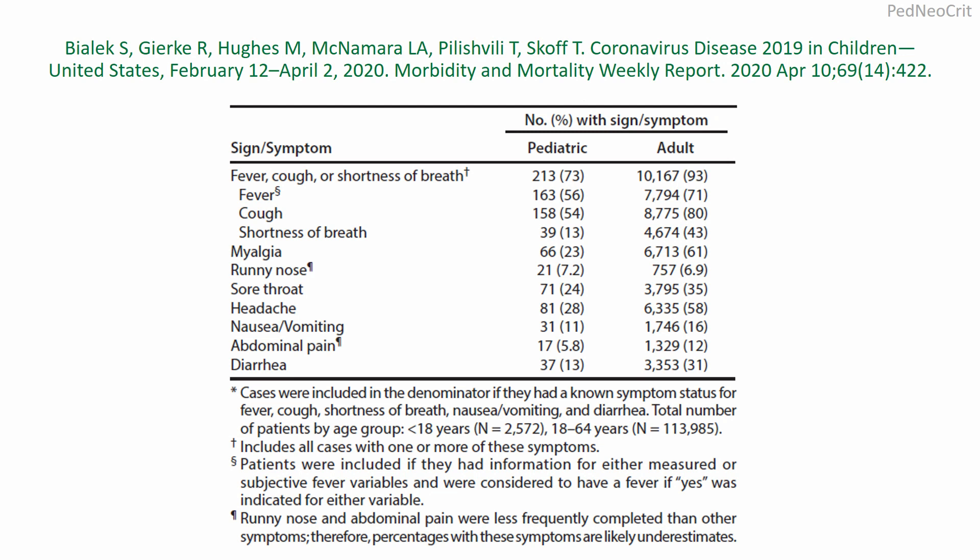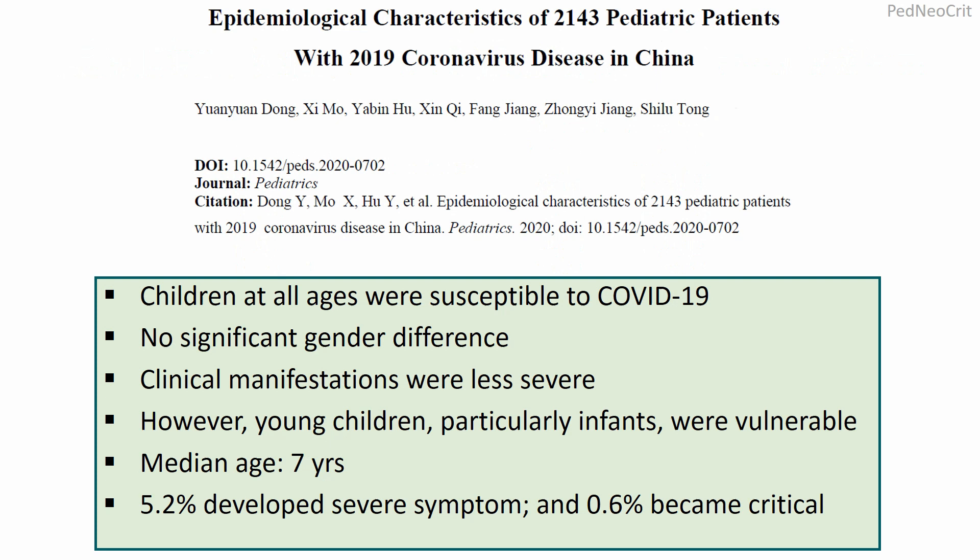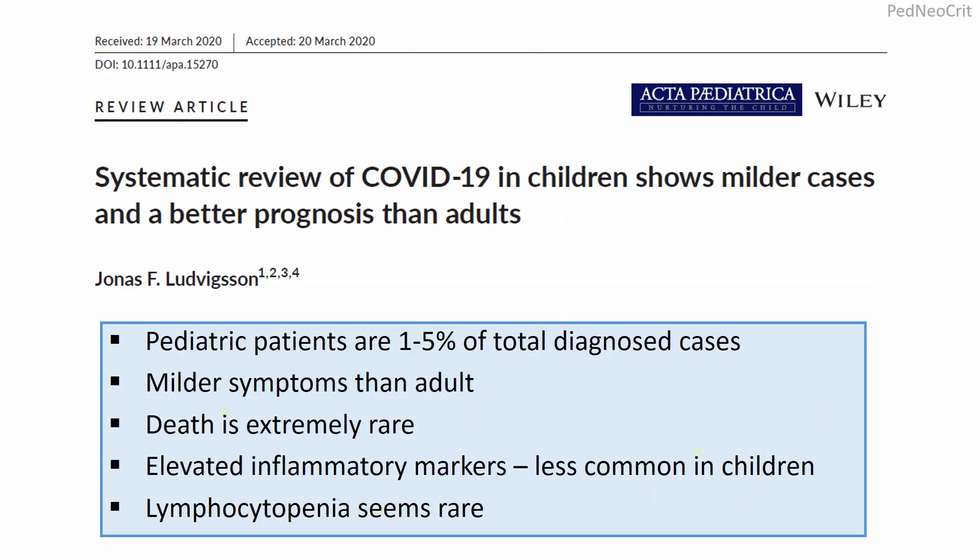This slide shows clinical presentations of pediatric patients in COVID-19 and a comparison with adult patients. This is a report of more than 2,500 patients, and it showed all symptoms were significantly less in children compared to adults. The epidemiological characteristics of 2,143 pediatric patients with COVID-19 in China also showed that clinical manifestations were less severe in children and mortality was also less. Pediatric patients represented 1 to 5 percent of total diagnosed cases, with milder symptoms than adults, death being extremely rare, and inflammatory markers and lymphocytopenia being less common in children.